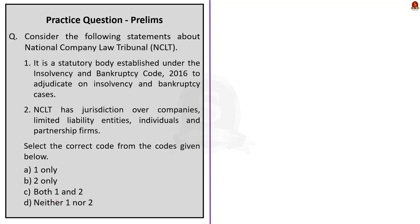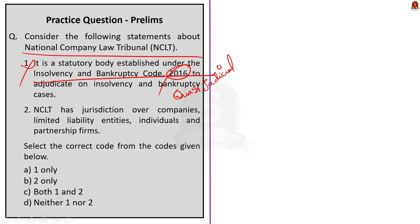The final question is about NCLT. Statement one says it is a statutory body established under the Insolvency and Bankruptcy Code 2016 — this is incorrect. NCLT is a quasi-judicial statutory body established under the Companies Act 2013. Statement two says NCLT has jurisdiction over companies, limited liability entities, individuals and partnership firms — this is also incorrect. NCLT has jurisdiction over companies and limited liability entities but not over individuals and partnership firms, which fall under the Debt Recovery Tribunal. The correct answer is option D — neither one nor two.